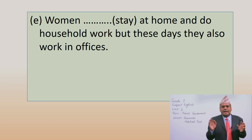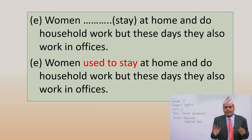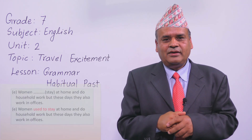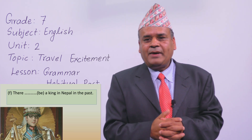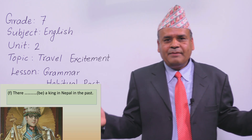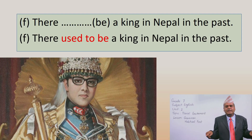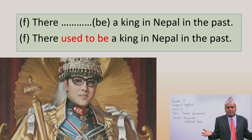Women used to stay at home and do household work. But these days they also work in offices. You can compare the two conditions — why we are using 'used to'. And there used to be a king in Nepal in the past. Is there a king in Nepal at present? No. There is no king in Nepal. So we write: there used to be a king in Nepal in the past. It is all past event. Today we are describing past activities.